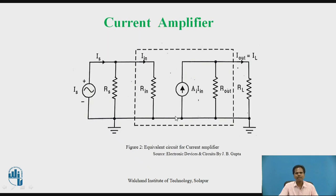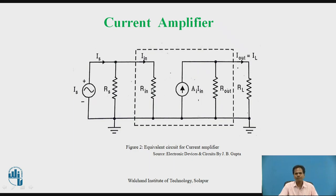Now let us go for the second type of basic amplifier: the current amplifier. In a current amplifier, the input signal is a current signal and the amplified output signal is also a current signal. The current amplifier works just like a current-controlled current source. The input impedance of the current amplifier should be low and the output impedance should be high. The ideal current amplifier amplifies the input current signal and provides an amplified output current signal proportional to the input. The proportionality constant, the forward transfer ratio, is designated as AI. It is independent of input signal source impedance and output load resistance impedance.